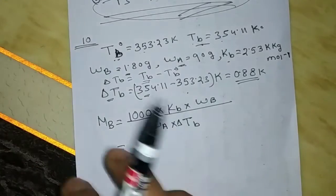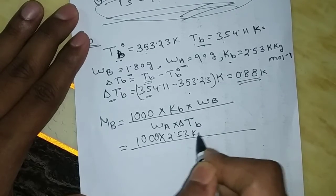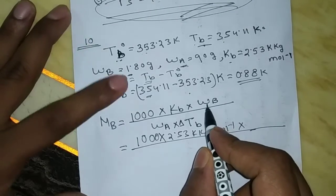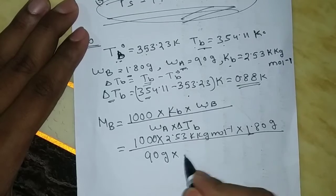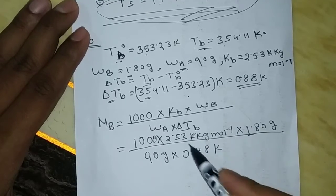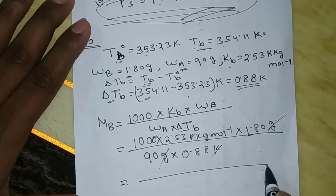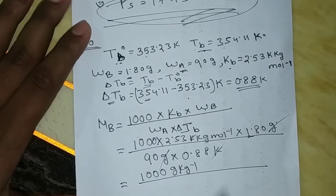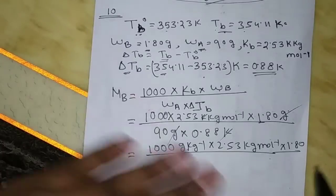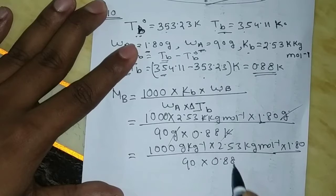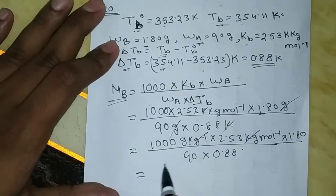Now we calculate the molar mass MB using: MB = (1000 × Kb × WB) / (WA × ΔTb) = (1000 × 2.53 × 1.80) / (90 × 0.88). The grams and Kelvin units cancel out, giving the molar mass of the solute equal to 58 grams per mole.